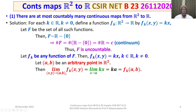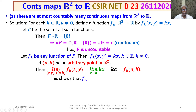We show that limit as (X, Y) tends to (A, B) of F_K(X, Y) equals K·A, which equals F_K(A, B). So this shows that F_K is continuous at (A, B). Since (A, B) is an arbitrarily chosen point of R square, F_K is continuous on R square. Thus F_K is a continuous function from R square to R.